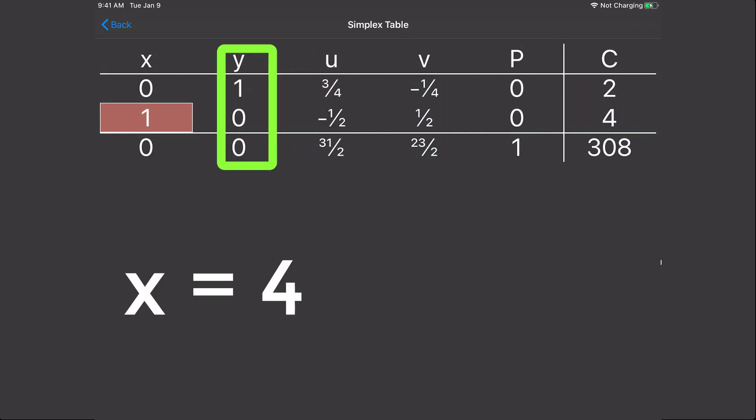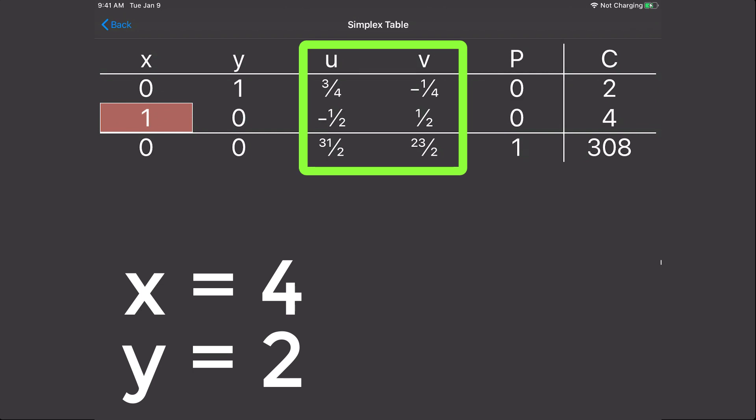Now Y's column is also a unit column. So find the 1, scan across to the constant column, and that gives us Y equals 2. Now just an FYI, you can see both U and V are junk columns, i.e. they're not unit columns. Now junk columns get an automatic value of 0. Now however, U and V are not really part of the original problem, so we just ignore them.